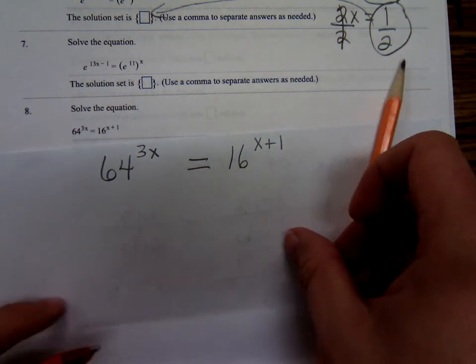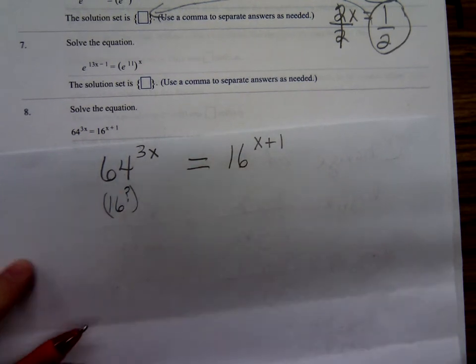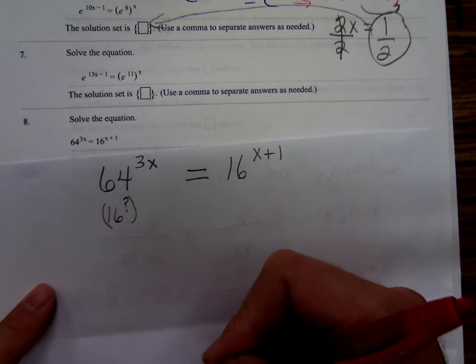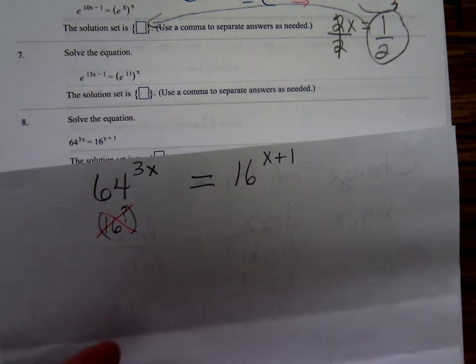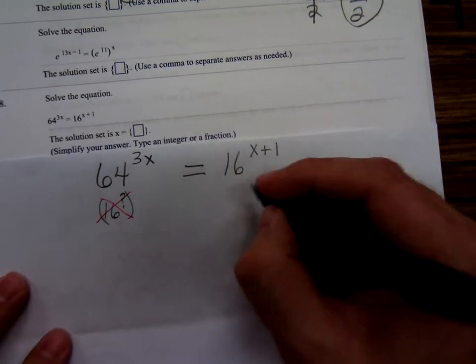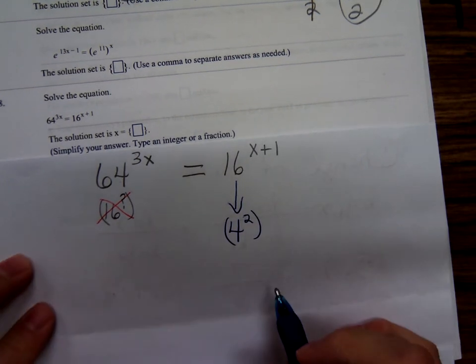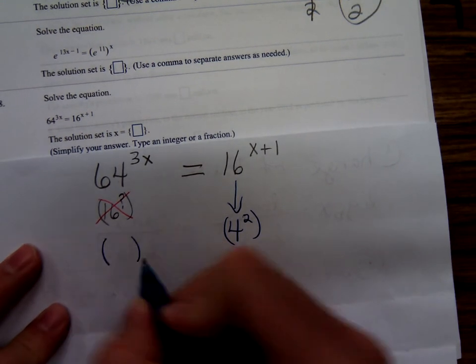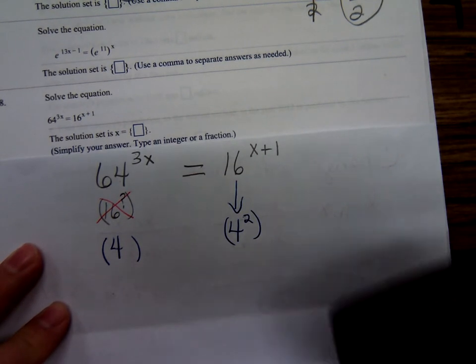Well, no. 16 squared is not going to give you 64. So, let's come to the 16 and think, how can I rewrite 16? I could rewrite 16 as 4 squared. Can I write 64 with a base of 4? How many 4s would I need to multiply together to get 64?